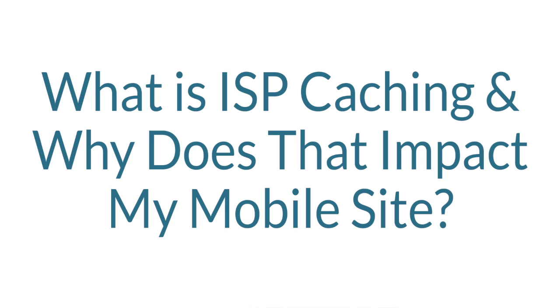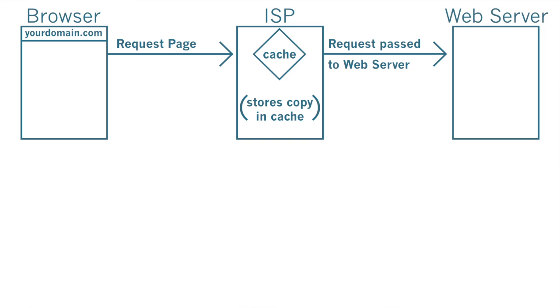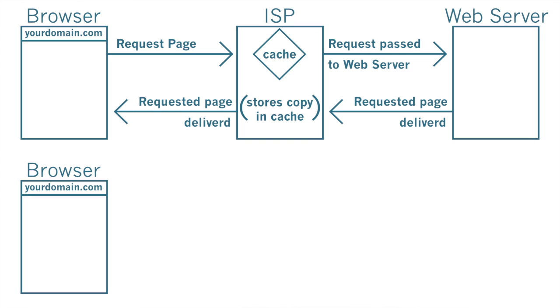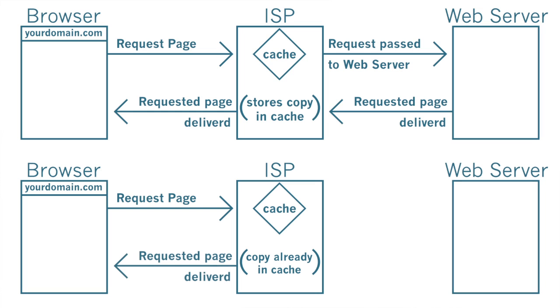But, what is ISP caching? And, why does that impact my mobile site? ISPs routinely store copies of frequently requested web pages on their own web servers. If a new user comes along and requests a web page from your site, www.yourdomain.com, instead of passing that request onto your web server, they deliver the web page to you themselves. They do this because it helps speed up internet access over their service.